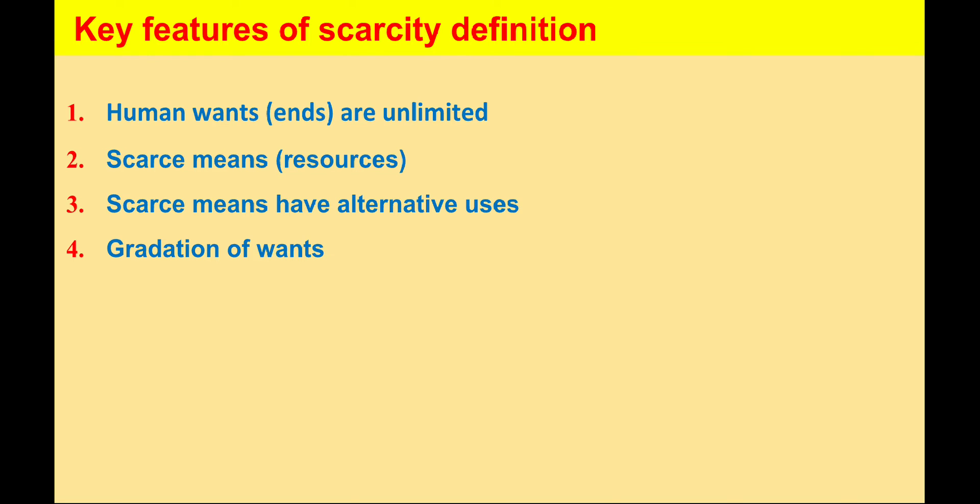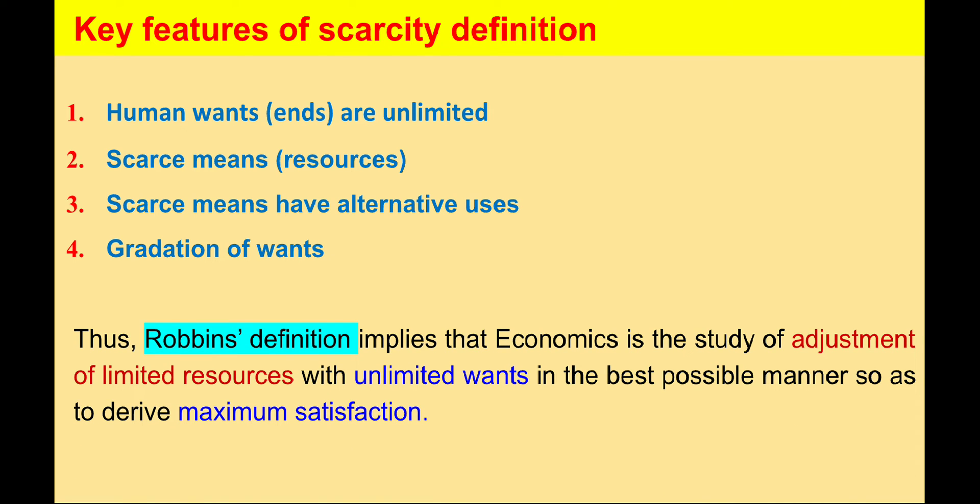If Sunil feels book is the most important, then the book will be ranked in the first position. If he feels uniform as the second important, then uniform will be ranked second. Similarly, wristwatch will be ranked third. In this way, Sunil has to make the gradation among all his wants. In this connection, Robbins has rightly stated that economics is a science of choice. That means in economics we are bound to make the choice among all our wants because we are facing limited resources. From the above analysis, it can be said that economics is the study of adjustment of limited resources with unlimited wants in the best possible manner so as to derive maximum satisfaction.